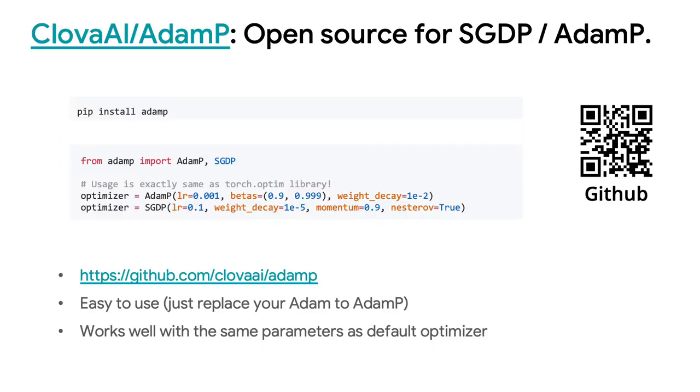AdamP is open sourced on GitHub. You can install AdamP with single line. Our optimizers work well with the same learning parameters as default optimizer. All function parameters are same as torch optimizers. So, just replace your Adam to AdamP and it will work well. If you are interested in AdamP, give it a try.